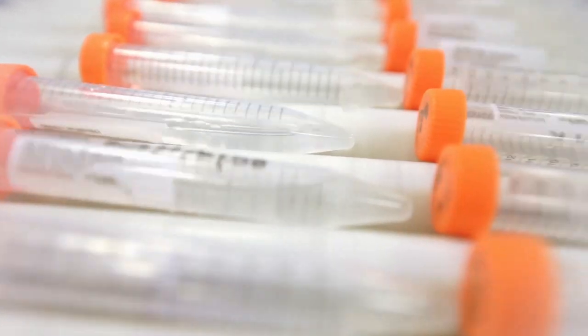Counting cells allows the accurate determination of cell numbers and therefore consistency between experiments. This video will outline the procedure for counting both suspension and adherence cells using a haemocytometer.